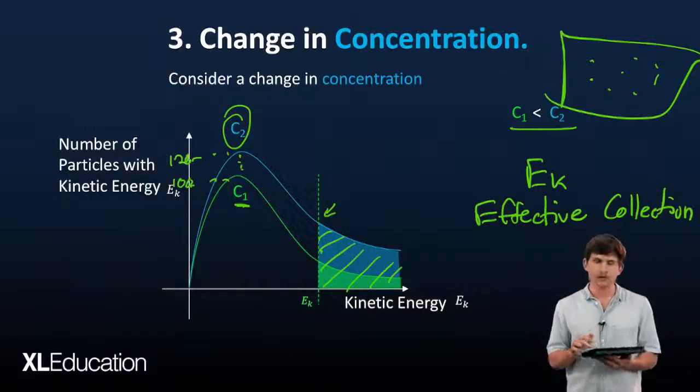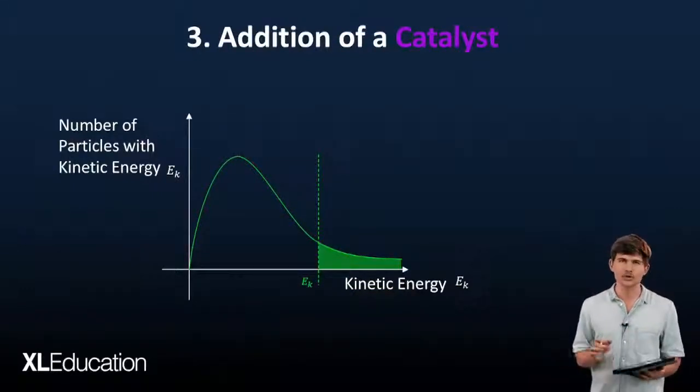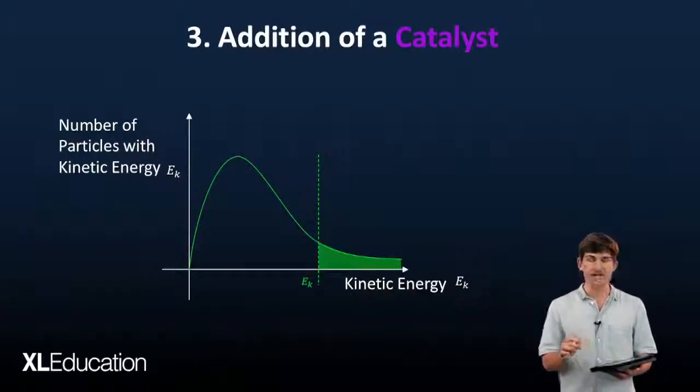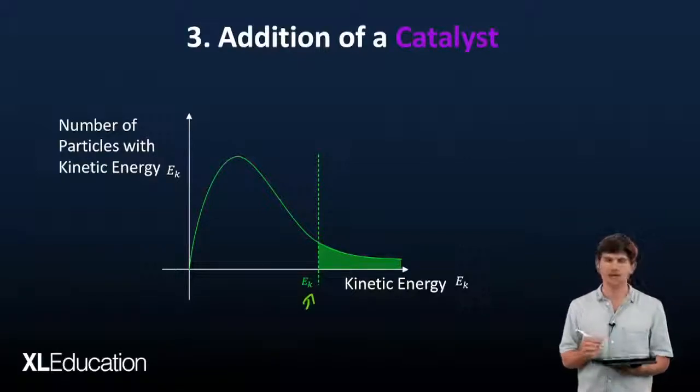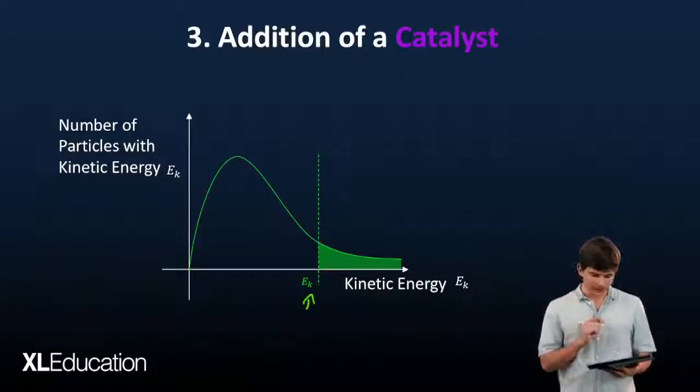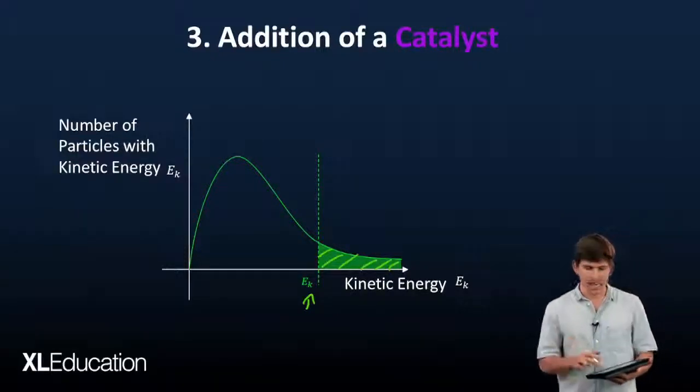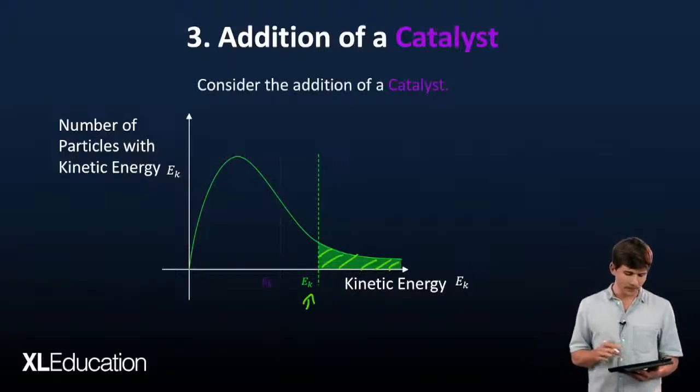Let's look at the final example: adding a catalyst. We have our original Boltzmann curve with our EK marked here. That is our activation energy required for an effective collision. This is how many particles we have that can undergo an effective collision.